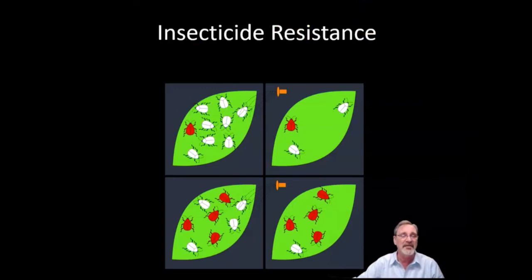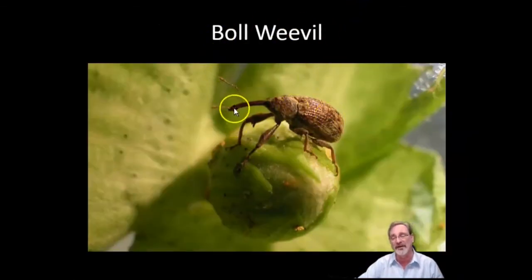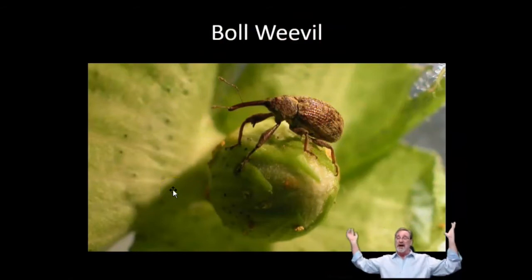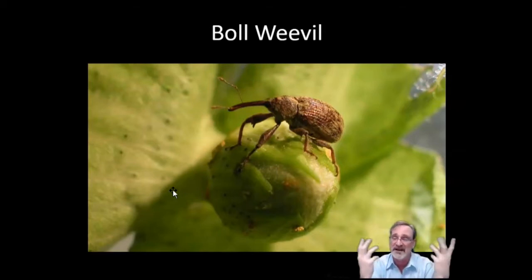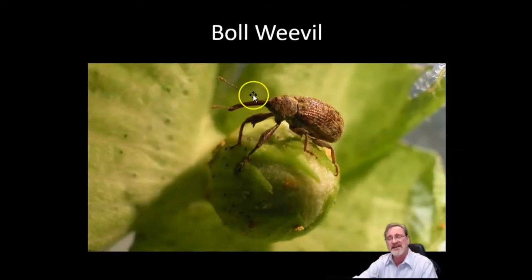Insecticide resistance—I'm going to tell you the story of the boll weevil. I could have chosen mosquitoes, aphids, crickets, anything you're trying to control. But the boll weevil is a pest that particularly attacks cotton, like in Texas or Mississippi or down south where they grow a lot of cotton. The boll weevil can ruin the crop and the farmer goes broke.